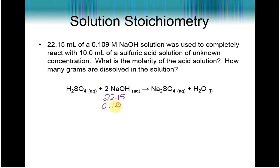So here's an example where we have 22.15 milliliters of a 0.109 molar NaOH solution that was used to completely react with 10 milliliters of sulfuric acid. What is the molarity of that solution? Well, I really would like you guys to pause and try these. I can't confirm that you're doing that while we're online, but it really helps if you try these on your own. At least think about it. Let's make our plan just to get to molarity. Because molarity is moles per liter, we can very easily get to moles of H2SO4 using stoichiometry, and then we can just divide by the liters.